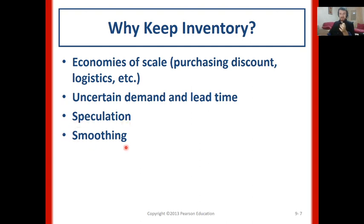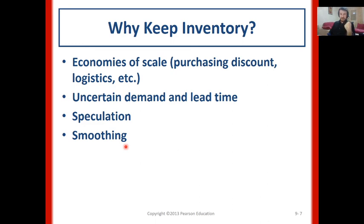The last reason, last but not least, is smoothing demand. Sometimes we might have high demand, sometimes low demand. However, as a production or operations manager, we would like to have regular, fixed capacity in our manufacturing plant. Therefore, we produce goods for high-demand seasons beforehand and keep them in inventory to meet future demand. This is called smoothing.